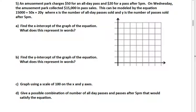This is a problem about an amusement park selling different kinds of tickets. There's an all-day pass that costs fifty dollars, or you can get a pass after 5 p.m. that costs twenty dollars. On a particular Wednesday, they sold fifteen thousand dollars in passes. They're giving us this equation where X is the number of all-day passes and Y is the number of passes after 5 p.m.